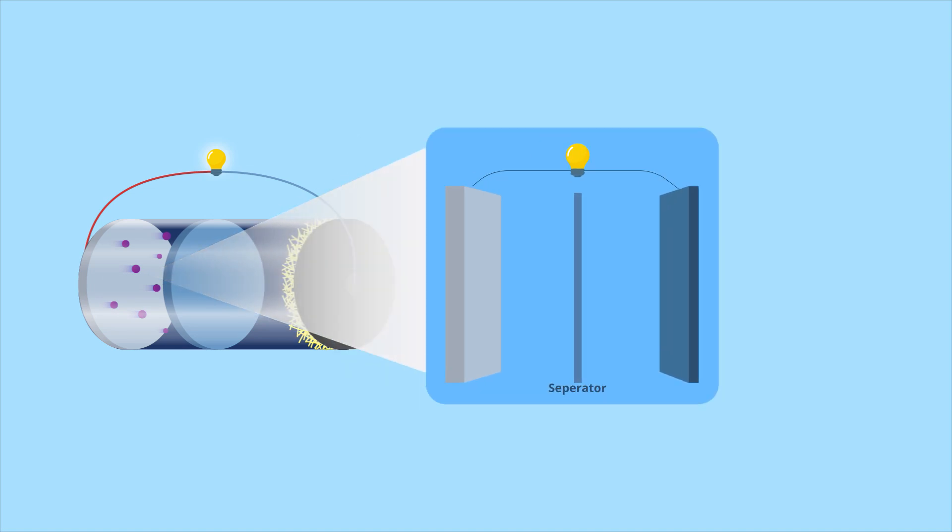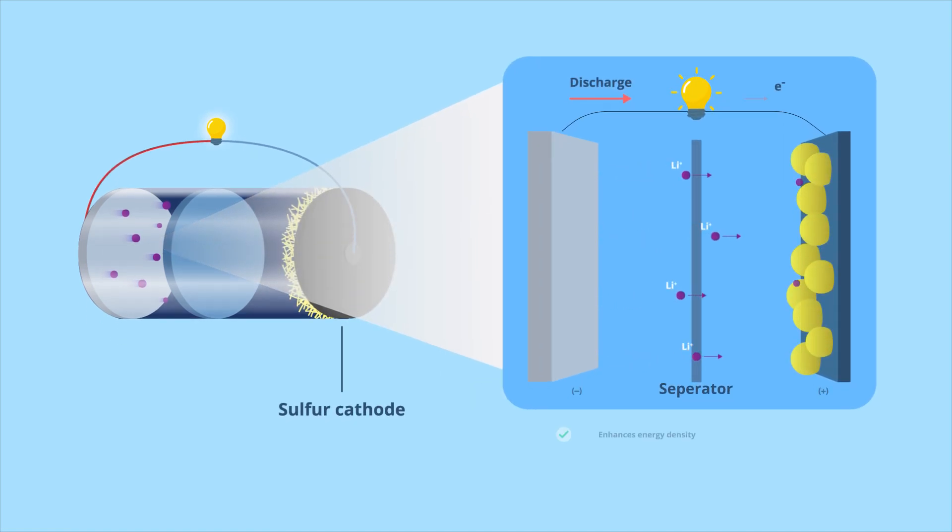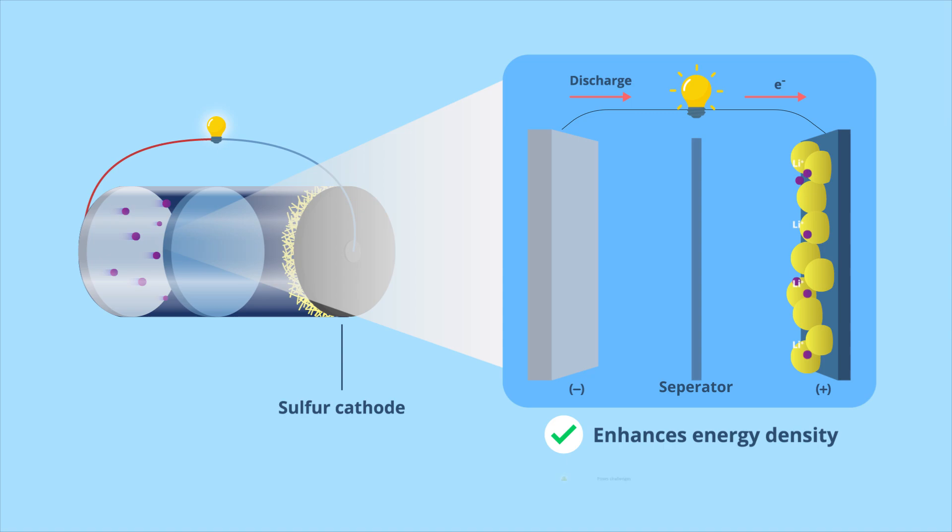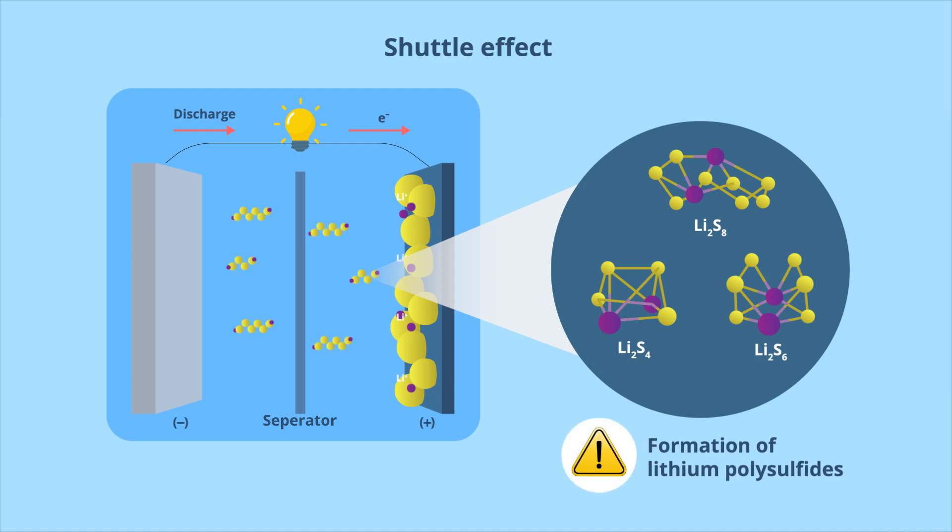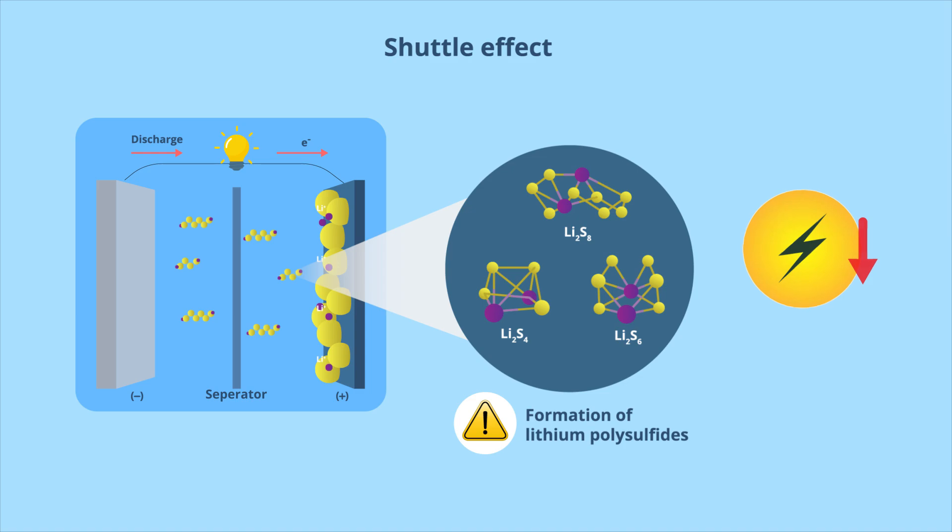However, the use of sulfur cathodes, which facilitates the enhancement in energy density, also poses certain challenges. One notable issue is the shuttle effect, in which intermediate lithium polysulfide species formed during battery discharge dissolve in the electrolyte. This gradual loss of sulfur content diminishes the battery's capacity over time.